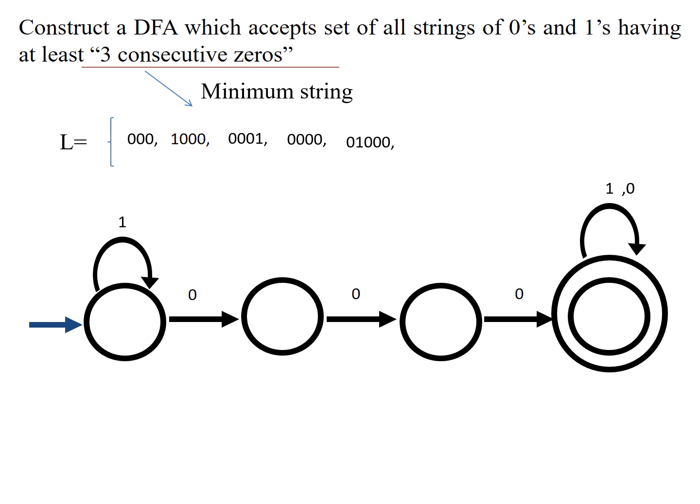That is wrong DFA design — so the transition on one from state two must go back to the start state. Similarly, after two zeros at state three, if a one appears, the one transition is missing and must be added going back to the starting state. On one, from state two and state three, both return to the starting state so three consecutive zeros can be re-achieved.